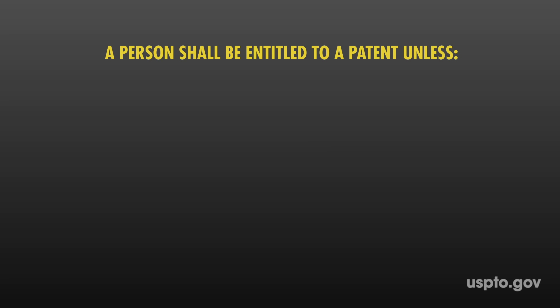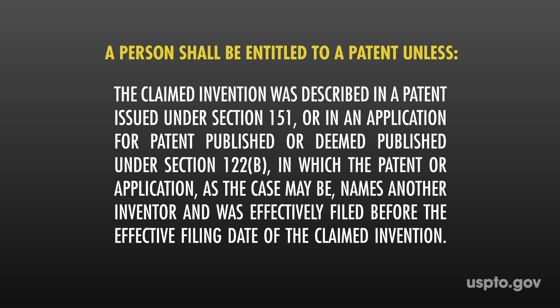A person shall be entitled to a patent unless the claimed invention was described in a patent issued under Section 151, or in an application for patent published or deemed published under Section 122B, in which the patent or application, as the case may be, names another inventor and was effectively filed before the effective filing date of the claimed invention.